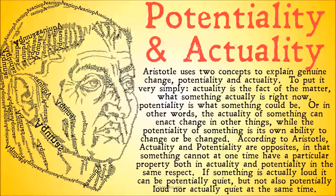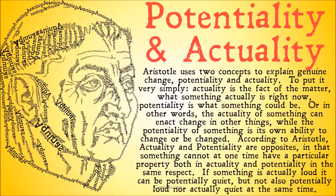Let's take a look at potentiality and actuality. This is somewhat confusing because it's not really how we talk about these things anymore, and these concepts aren't how we explain the world. But that doesn't mean they couldn't categorize things that still exist. Aristotle uses two concepts to explain genuine change: potentiality and actuality. Simply put, actuality is the fact of the matter — what something actually is right now. Potentiality is what something could be. The actuality of something can enact change in other things, while the potentiality of something is its own ability to change or be changed.